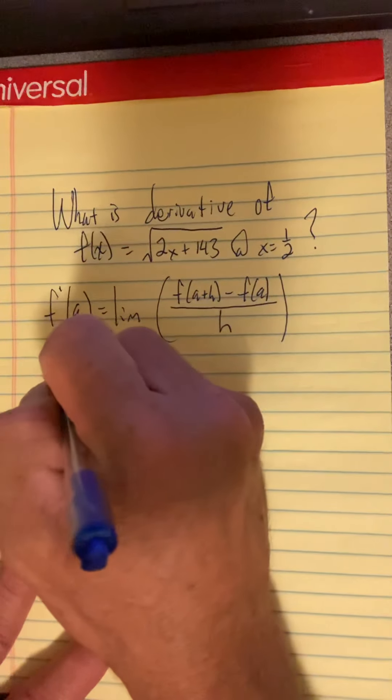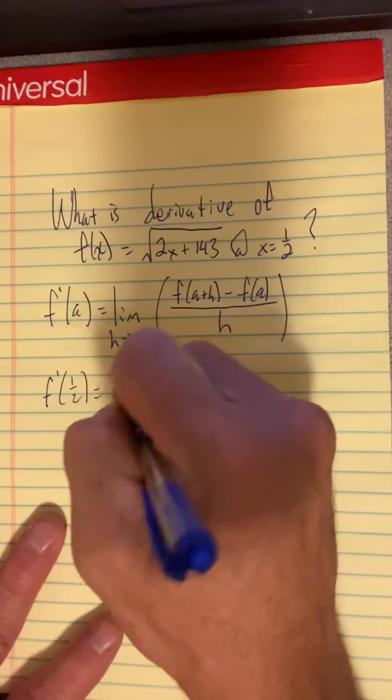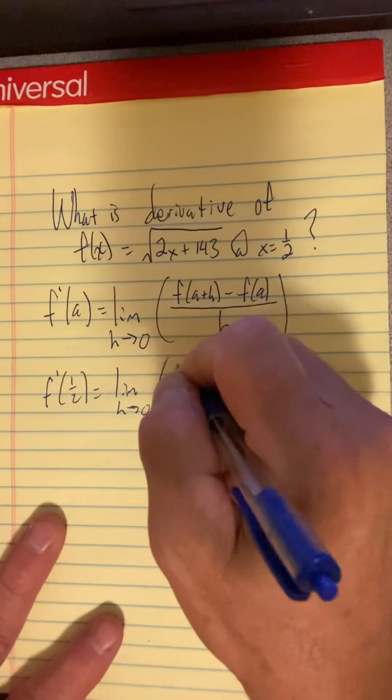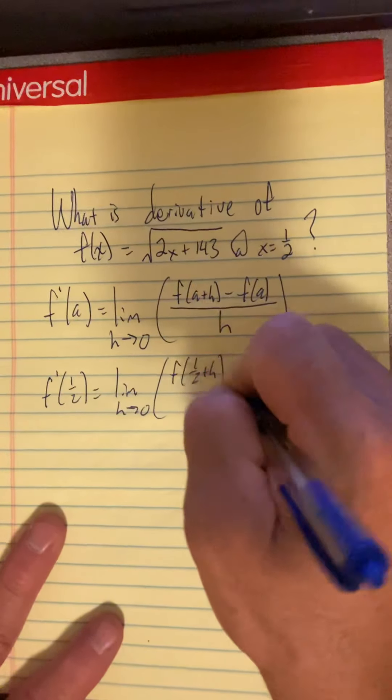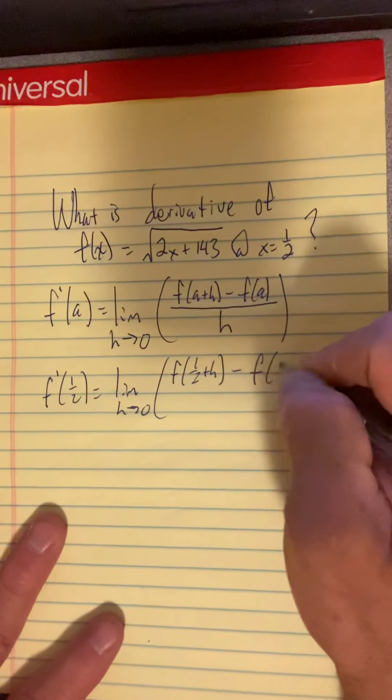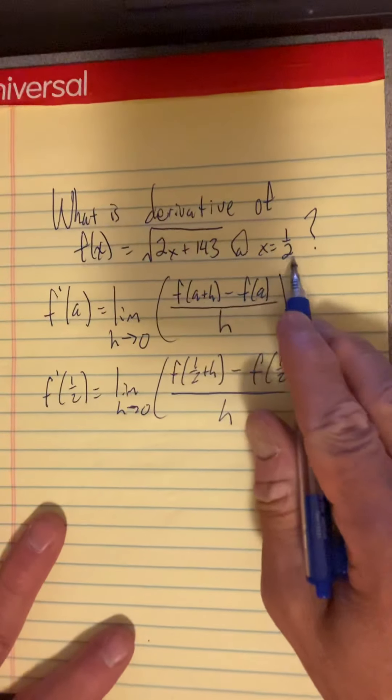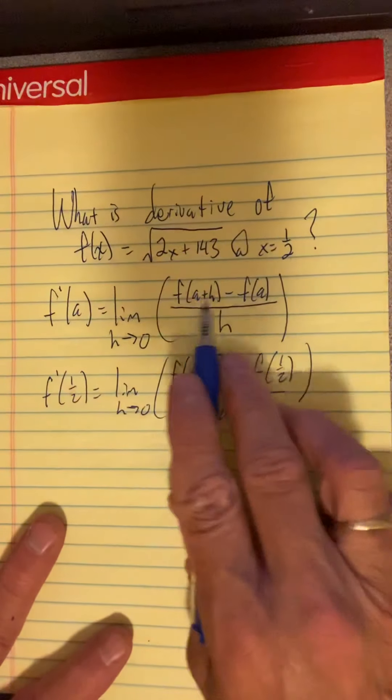So we're going to have f prime of a half and it equals the limit as h goes to zero of f of one half plus h minus f of one half all over h because our a was a half. And we plug that in for the a's.